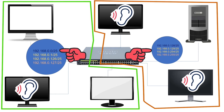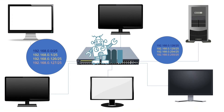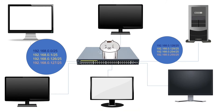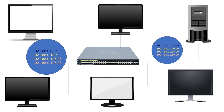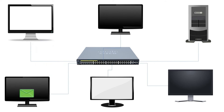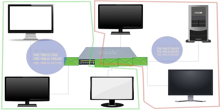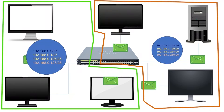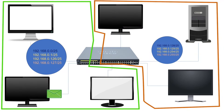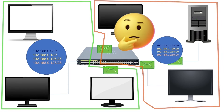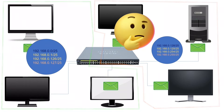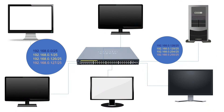Since switches do not understand layer 3 addresses, they use their own logic to make forwarding decisions. They forward broadcast messages to all connected devices. As a result, broadcast messages generated in one subnet reach another subnet, making subnetting useless. VLAN solves this problem.